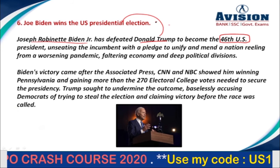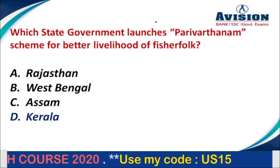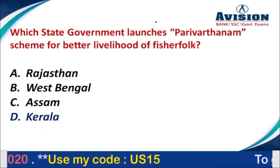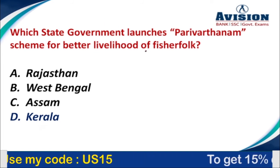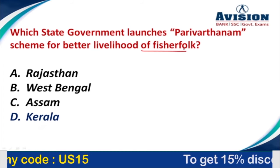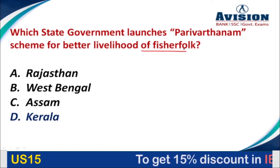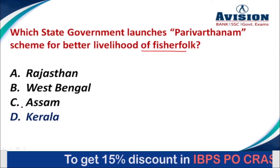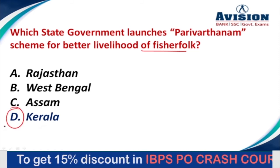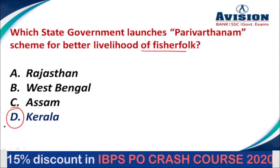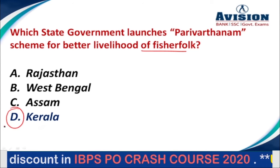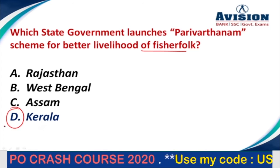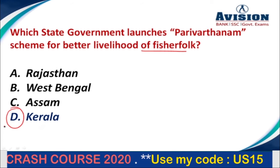Question number 7: Which state government launched the Pariwarthanam scheme for better livelihood of fisher folk? Options are Rajasthan, West Bengal, Assam, or Kerala. The correct option is option D, that is Kerala.